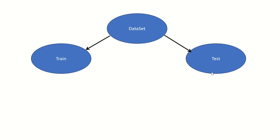Data leakage means information goes outside its boundary. We process the data together, and that information gets passed on to the test set. If we pass train data information to the test data, the results are abnormal. This concept is data leakage.